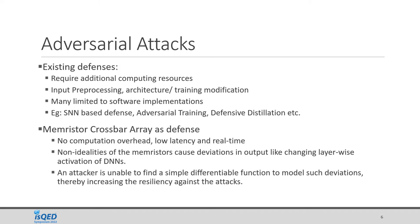There are many existing defenses against adversarial attacks. These defenses require additional computing resources and mostly fall under the categories of input pre-processing, architecture modification, or training modification. Many of these methods are limited to software implementations. Memristor crossbar arrays can also be used as a defense, as shown by recent literature, without requiring extra computations, with advantages of low latency and real-time operation. The non-idealities of memristors cause deviations in output, making it difficult for attackers to find a simple differentiable function to model such deviations and create attacks. Thus, memristor crossbar arrays have higher resiliency than traditional deep neural network implementations.